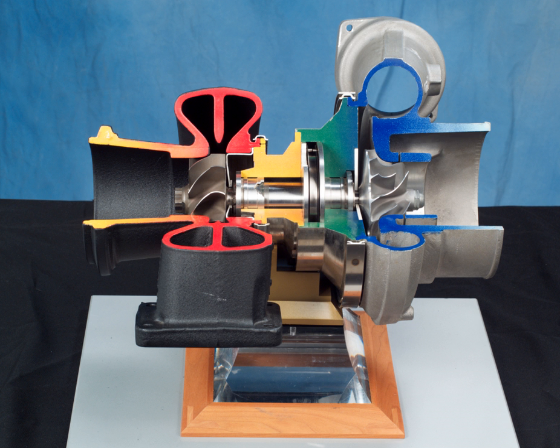Roots superchargers impart significantly more heat to the air than turbochargers. Thus, for a given volume and pressure of air, the turbocharged air is cooler, and as a result denser, containing more oxygen molecules, and therefore more potential power than the supercharged air.